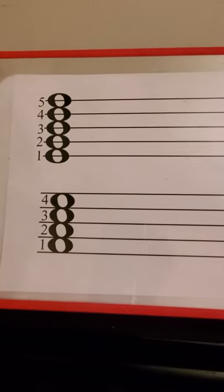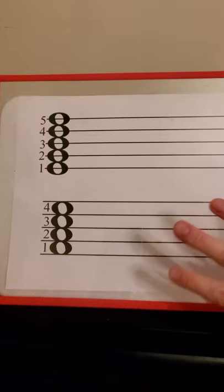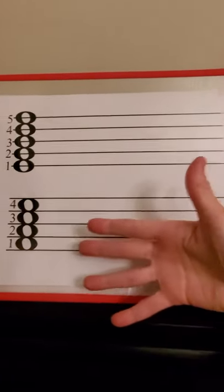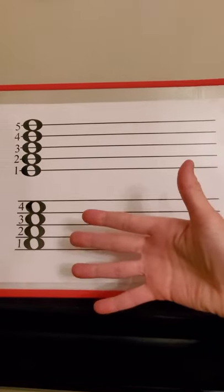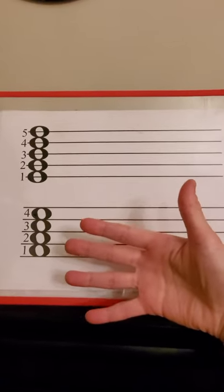This video is on anchor notes. I'm going to start with a quick review of basic theory. When we have a staff, a staff is five lines. Why? Because we have five fingers? Most of us do. Some have more or less, but most of us have five fingers.